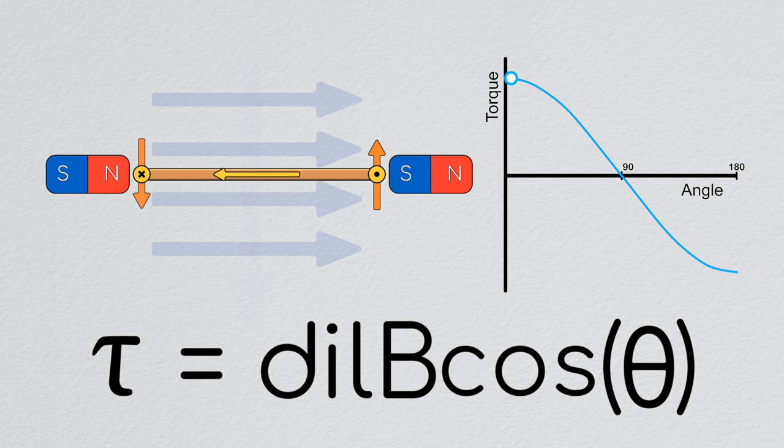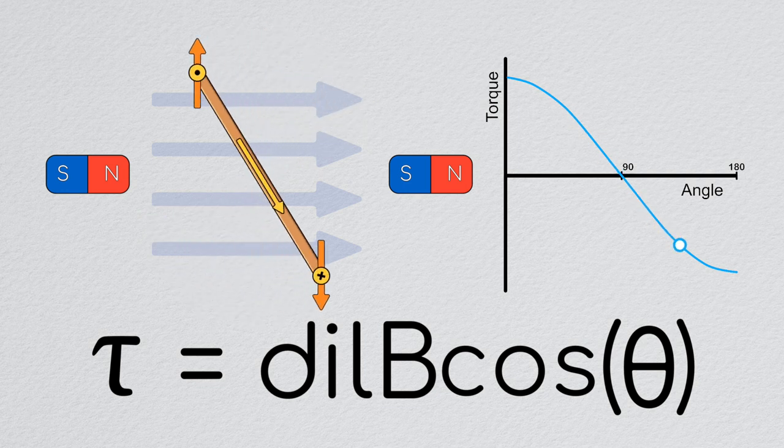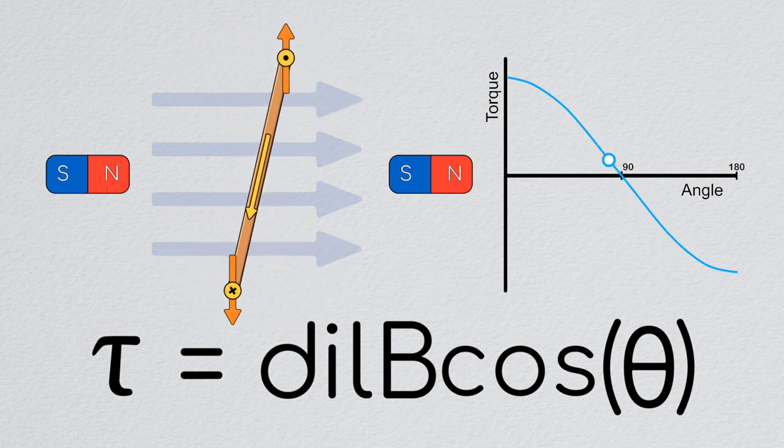This may seem like a silly thing to point out, but it'll be a very useful idea around episode 5. The second thing I want to draw your attention to is that because the torque on the loop goes down to zero when the loop is perpendicular with the external field, this loop cannot be controlled to any arbitrary orientation.